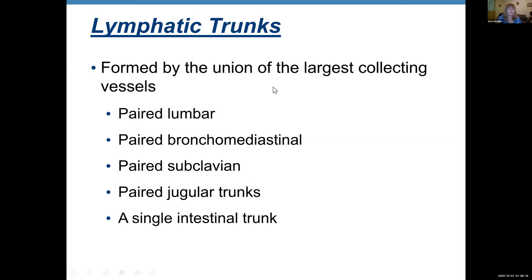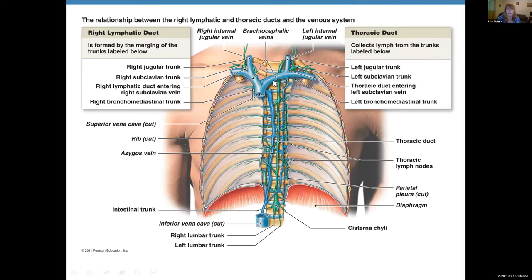Trunks are formed by the union of the largest collecting vessels. Most trunks are paired: we have paired lumbar, paired bronchomediastinal, paired subclavian, paired jugular, and a single intestinal trunk. You can see all these different trunks — the right jugular trunk, left jugular trunk, subclavian trunk, and so on.